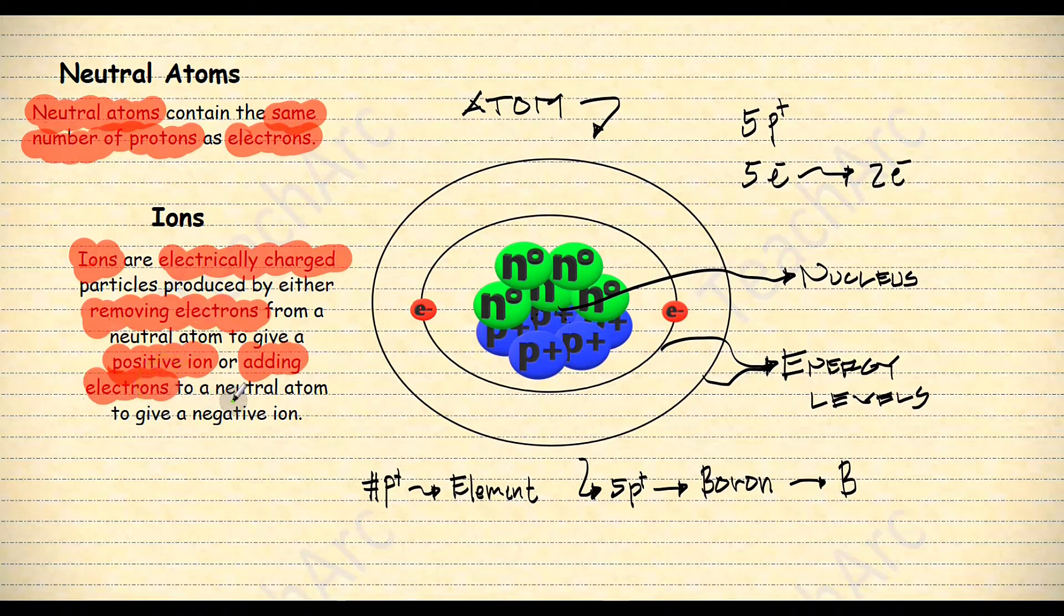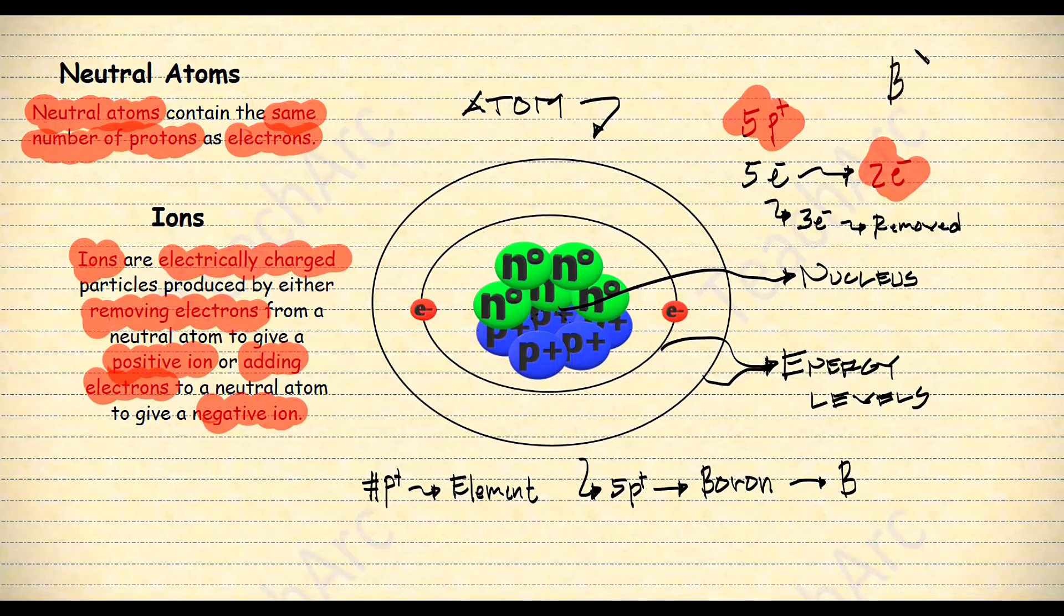In our example here, the electrons were removed, giving our boron here a positive charge. Since there are more protons than electrons, the charge will be 3+. And take note that we write the number first before the sign when we indicate charges.